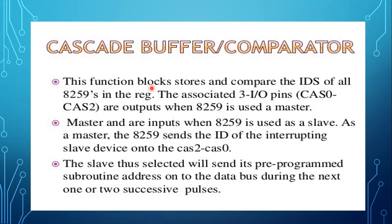In the fifth step, when the microprocessor decodes the call instruction, it places two more INTA signals on the data bus. In the sixth step, when the 8259 receives the second INTA, it places the low-order byte of the call address on the data bus, and on the third INTA, it places the high-order byte. In the seventh step, during the third INTA pulse, the ISR bit is reset either automatically or by command word of ICW. Finally, the program sequence is transferred to the memory location specified by the call instruction.